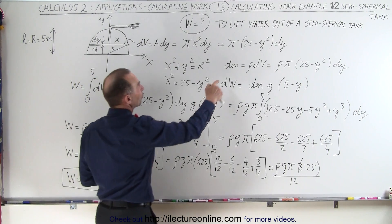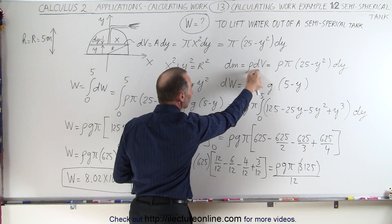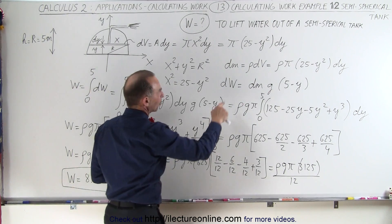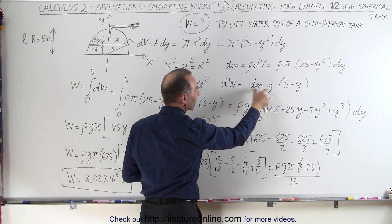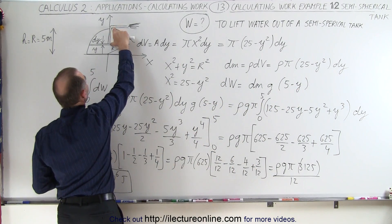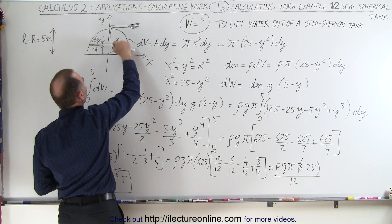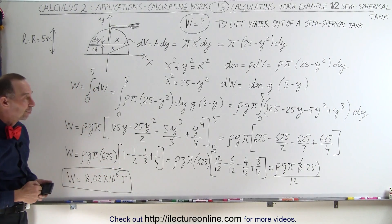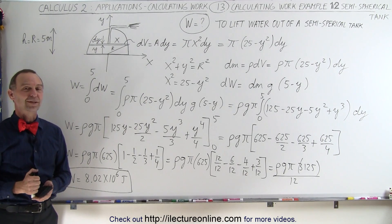Then dm is going to be the density times the volume. Then we can go ahead and find the work done by saying that the work done is equal to the mass times g times the height to which we have to lift it. It will be 5 - y, the height each slice needs to be lifted by. And then we have to integrate that, and there's the result. That's how it's done.